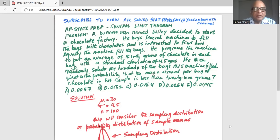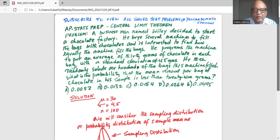A businessman named Wiley decided to start a chocolate factory. He buys several machines to fill the bags with chocolates and is interested to find how equally the machines fill the bags. He programs the machine to put an average of 30 grams of chocolate in each bag with a standard deviation of 4.5 grams. He then randomly selects 100 of the bags this machine filled. What is the probability that the mean amount per bag of chocolate in his sample is less than 29 grams? And there are five options given to us for the probability value.